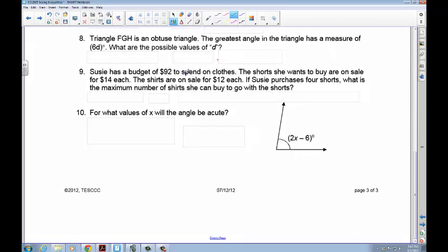Suzy has a budget of $92 to spend on clothes. The shorts she wants to buy are on sale for $14 each. The shirts are on sale for $12 each. If Suzy purchases four shorts, so let's write the shorts she wants to buy. She wants to buy four shorts, which are $14. And what is the maximum number of shirts she can buy to go with her shorts? So on our shirts, we don't know how many we're going to buy because we don't know how much we have enough money for. So her budget is $92. You know that $92 is in the box. We can spend $92 or less than $92.